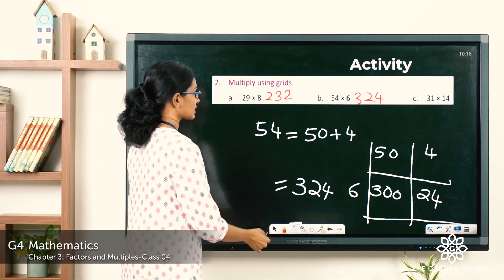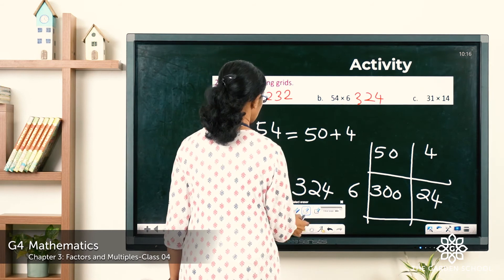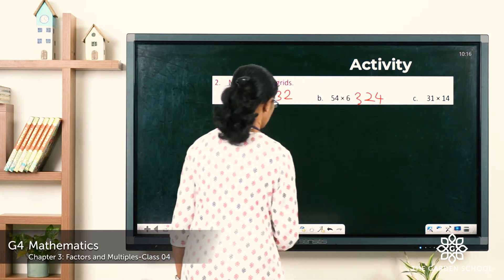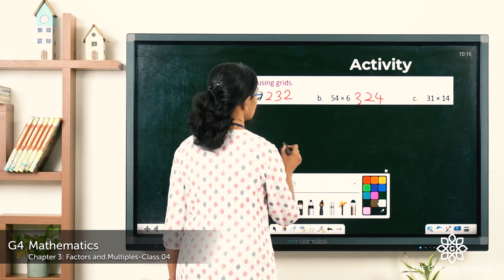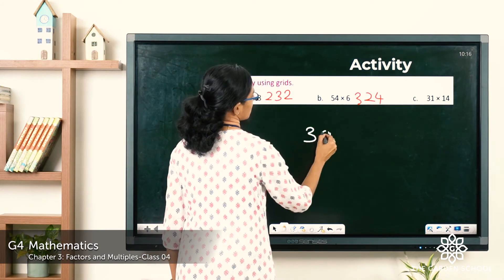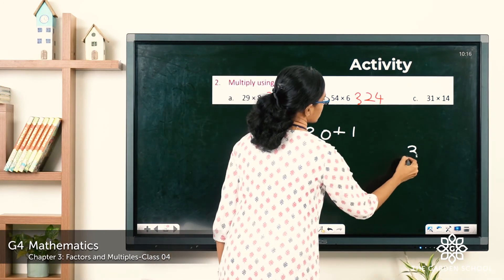Now let's see the next question, question C. 31 into 14. Let's see how we can split 31. 31 can be split into 30 plus 1. So let's draw the grid for that.